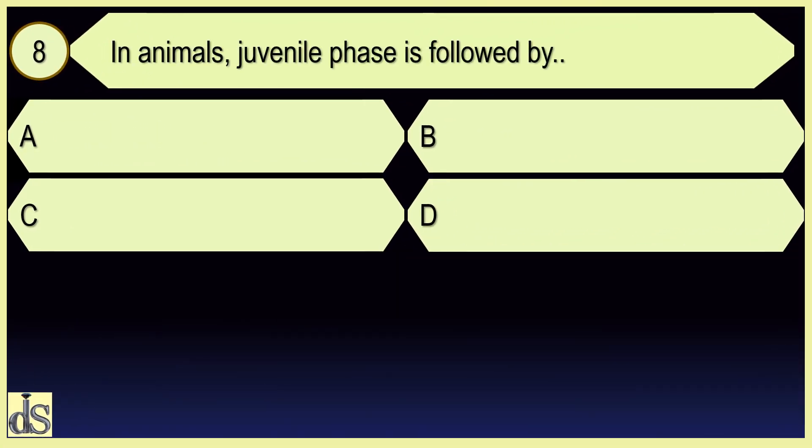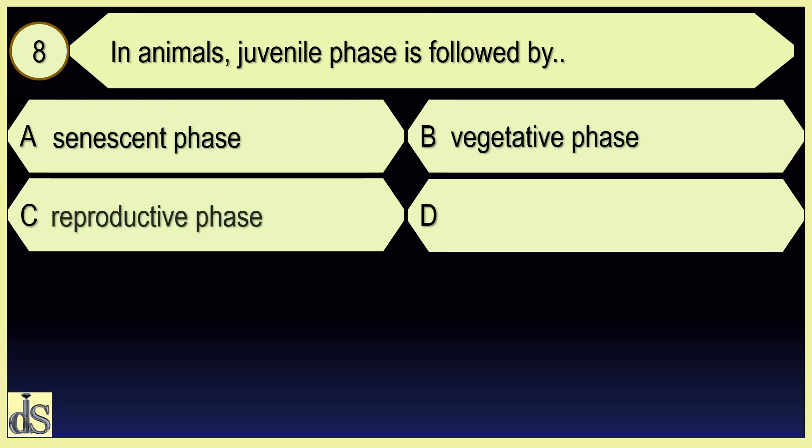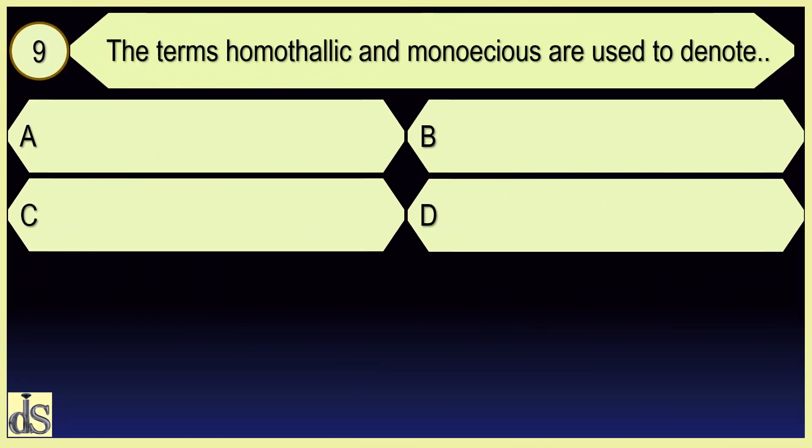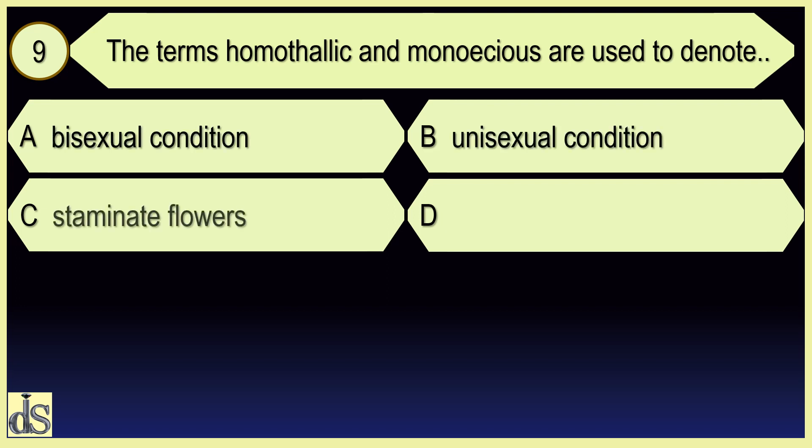In animals, juvenile phase is followed by reproductive phase. The term Monothalic and Monoicious are used to denote bisexual condition.